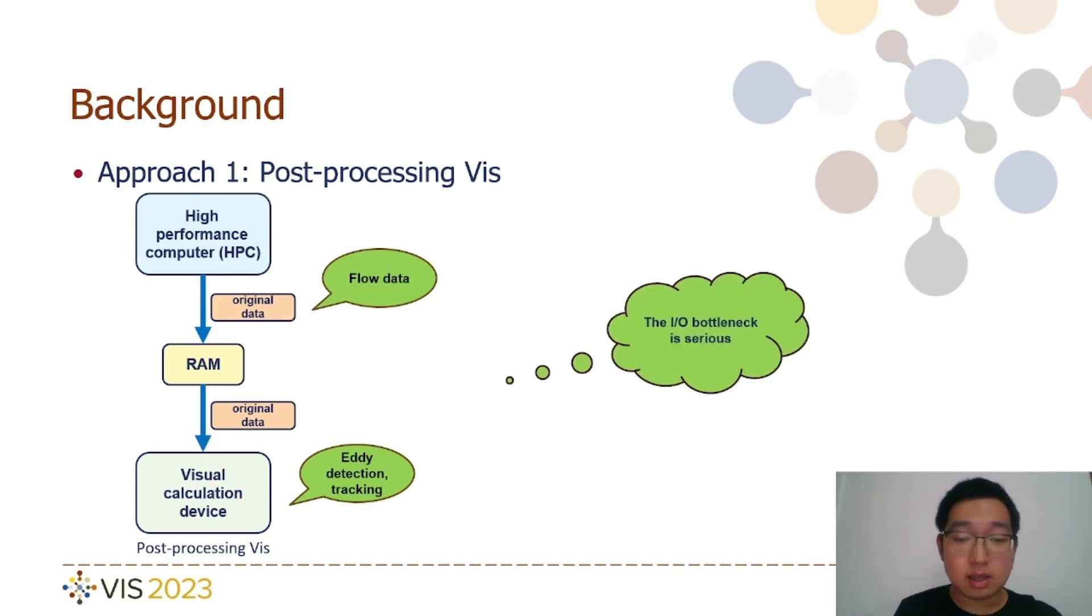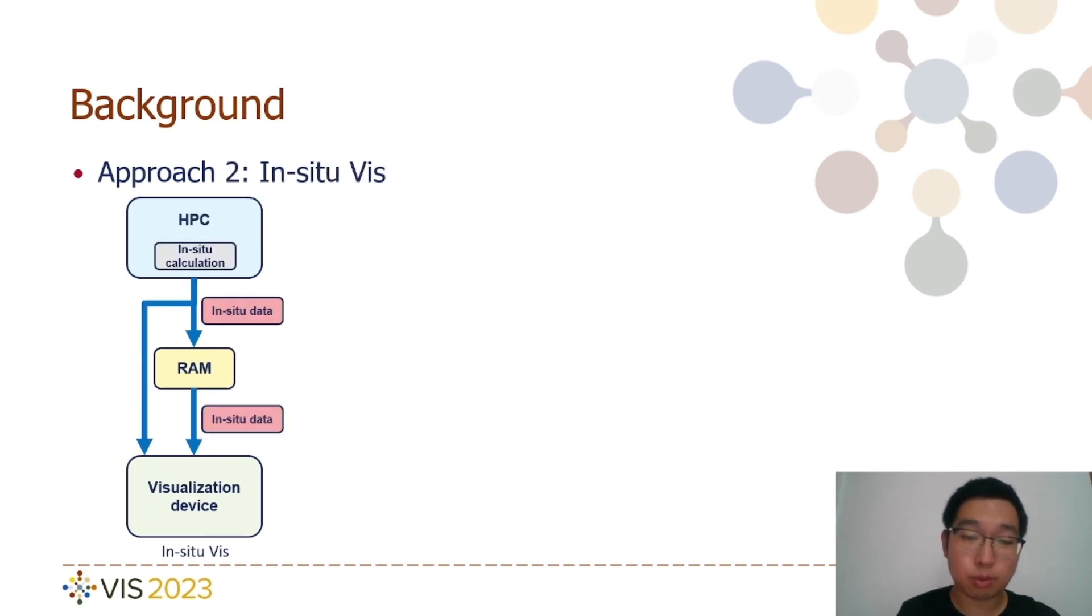Nonetheless, the most significant drawback of this approach is the disparity between the computational speed of high-performance computers and the input-output speed, leading to a severe IO bottleneck issue. Another approach relies on in-situ visualization.